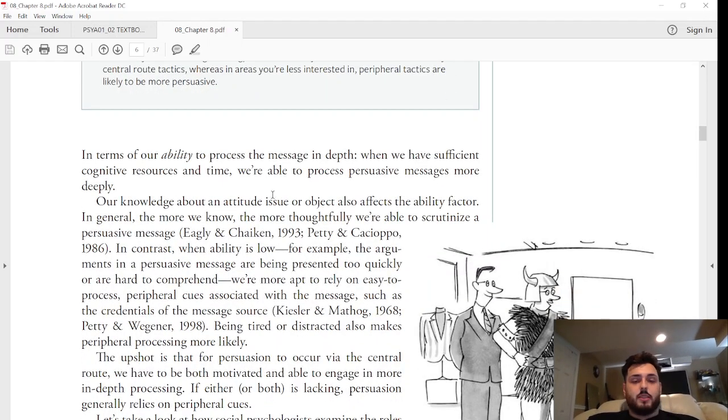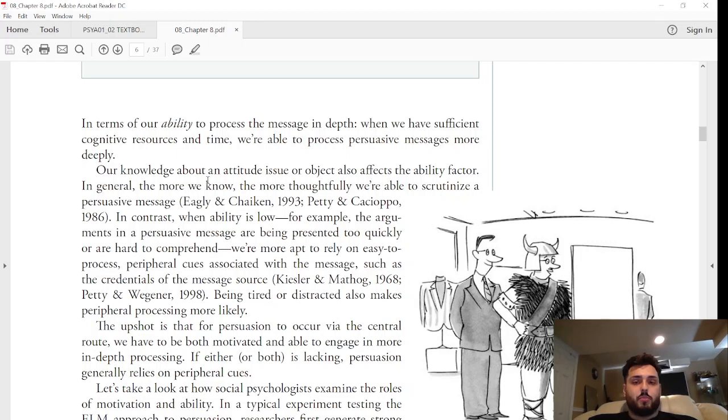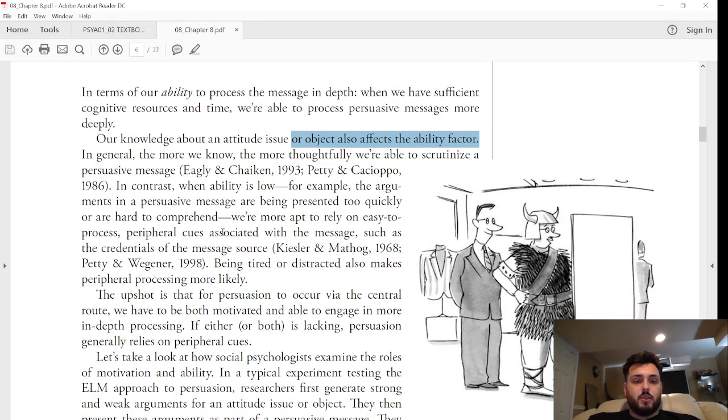In terms of our ability to process the message in depth, when we have sufficient cognitive resources and time, we're able to process persuasive messages more deeply. Our knowledge about an attitude issue or subject also affects the ability factor. This line here would be perfect for your systematic breakdown: your knowledge of the subject, your knowledge on the attitude and the issue—it affects everything about what we're being persuaded on. In contrast, when ability is low, the arguments in a persuasive message are being presented too quickly or are hard to comprehend, we're more apt to rely on easy-to-process peripheral cues associated with the message, such as the credentials of the message source.